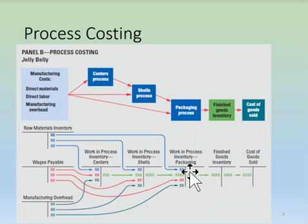Process costing is generally used for products that are homogeneous and made in batches, usually at low cost, where units are virtually identical to one another.